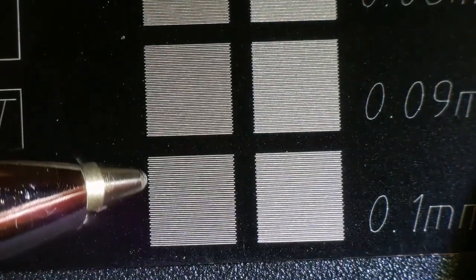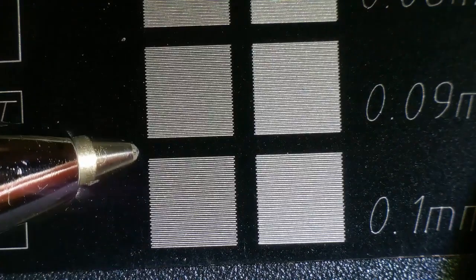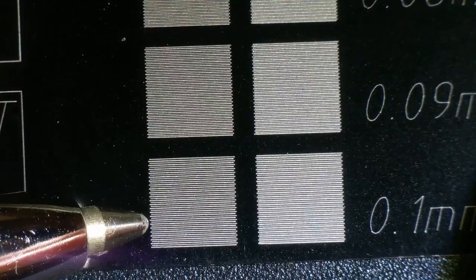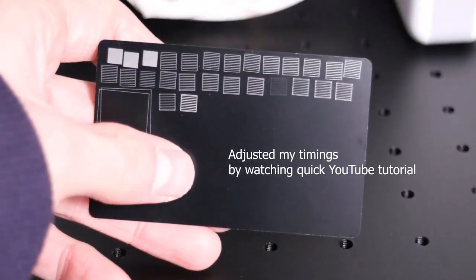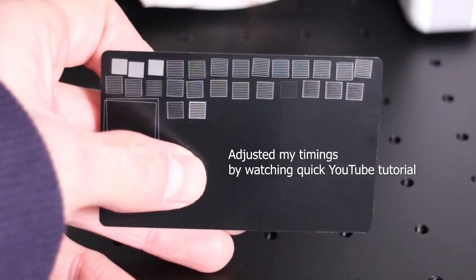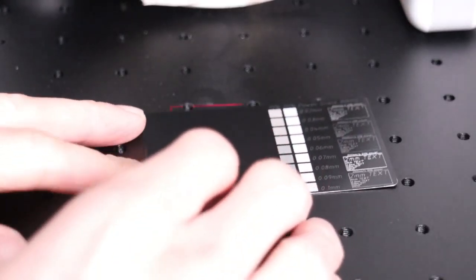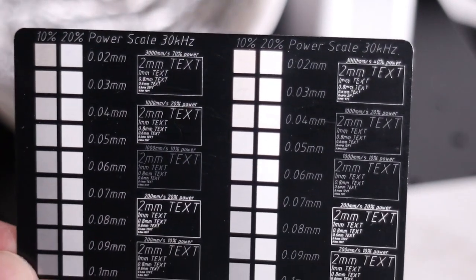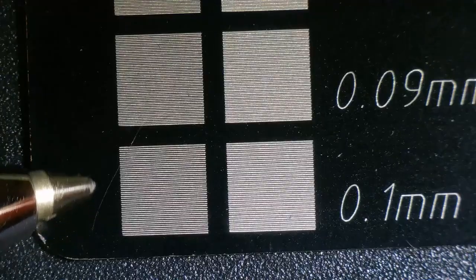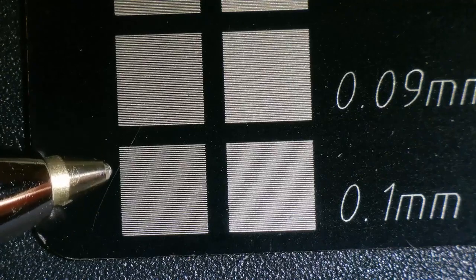Looking at the interval test, we can see that the edges of the lines are not perfectly aligned when filling with alternating beam direction. This shows that the laser source timings are not set correctly. I followed an online tutorial for timing adjustment in Lightburn and ran the test again. Here we can see that the edges are now much better aligned.